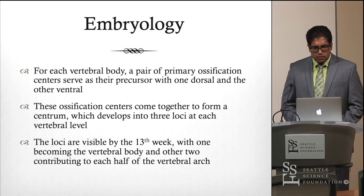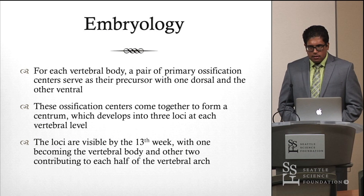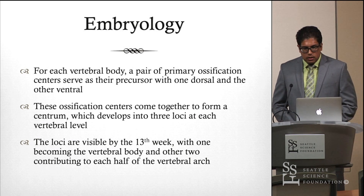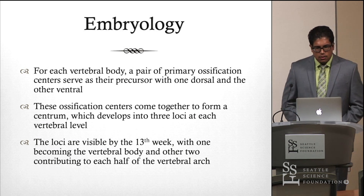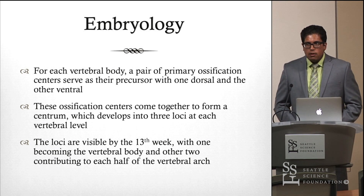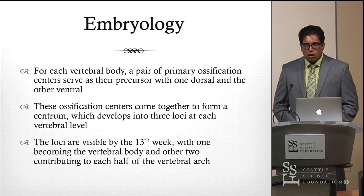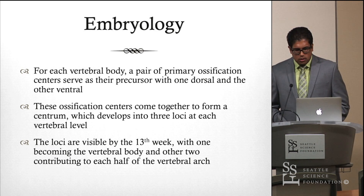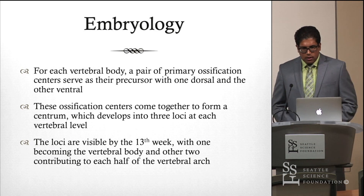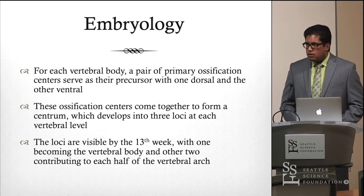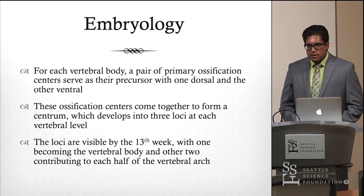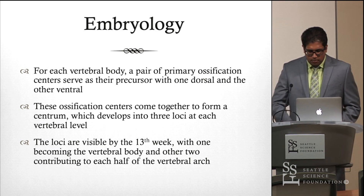The centrum develops into three separate loci, also present at each level, which are usually visible by the 13th week of gestation. As they develop, one locus forms the future vertebral body and the remaining two contribute to each half of the vertebral arch. This is a very complex developmental sequence, and any mistake along these steps can lead to the development of hemivertebra.